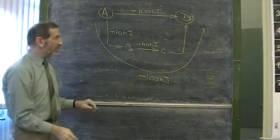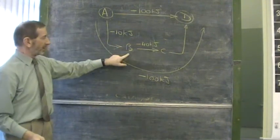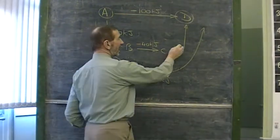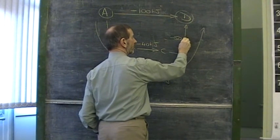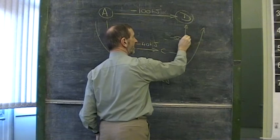Then it follows that since this adds up to minus 50 and the whole thing has to be minus 100, this step must be minus 50 kJ. It seems very simple.